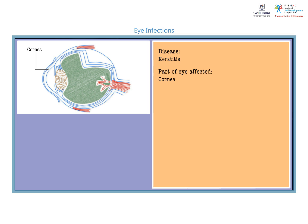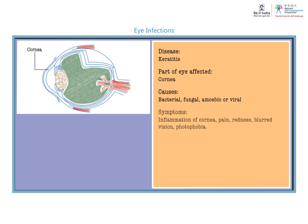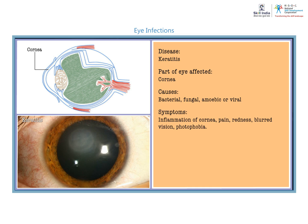Keratitis is an infection where the cornea of the eye is affected, and it can be caused due to bacteria, fungus, amoeba, or virus. The common symptoms are inflammation of the cornea, pain and redness in the eye, which leads to blurred vision and also photophobia, or intolerance to light.